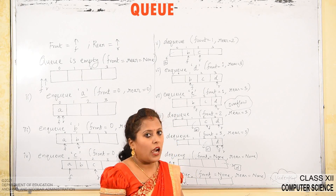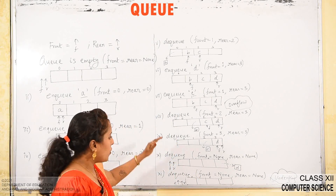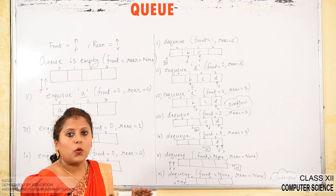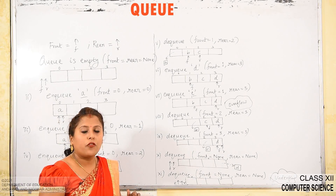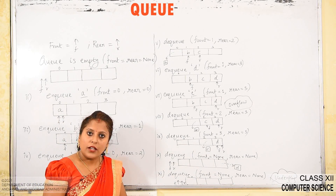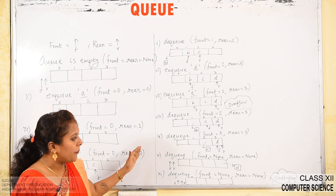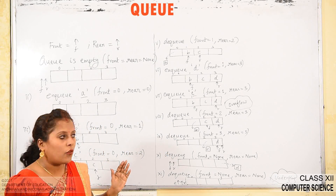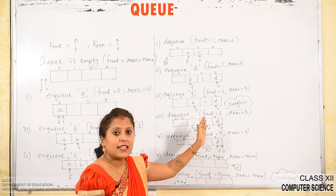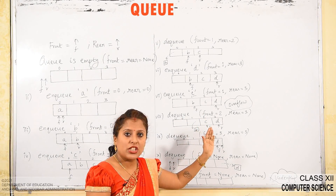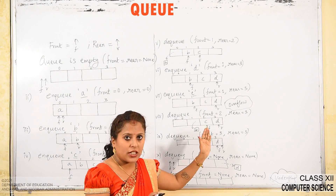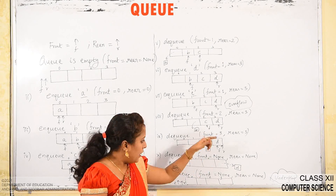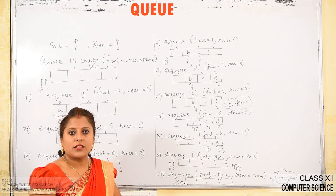In this way, NQ and DQ operations are performed on a queue. In pictorial form, you can see how values are inserted, how they are removed, and how the front and rear index positions change simultaneously with each operation.